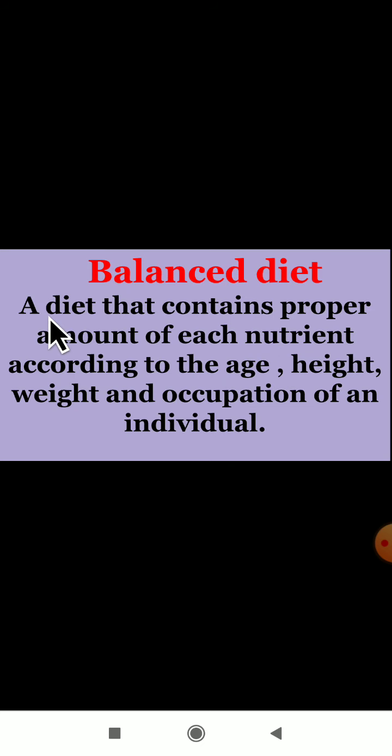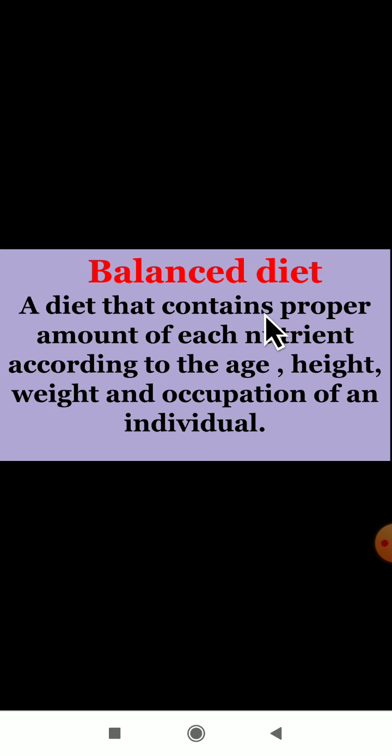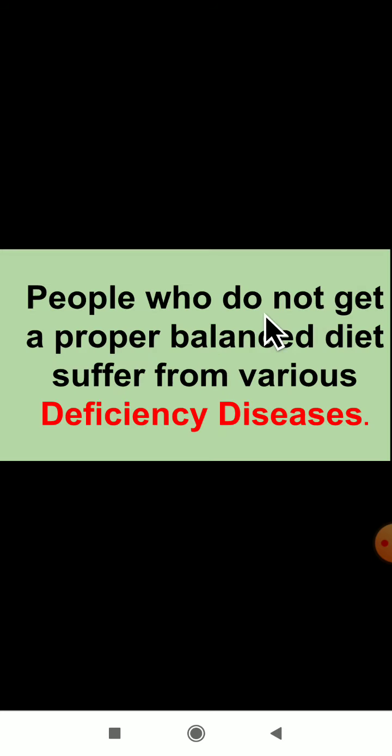A diet that contains a proper amount of each nutrient according to the age, height, weight, and occupation of an individual. We have to follow a balanced diet. If we are not following the balanced diet, deficiency diseases will come. If any one nutrient is absent, deficiency diseases start.